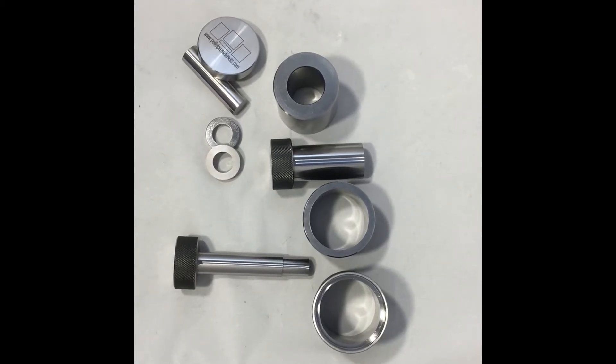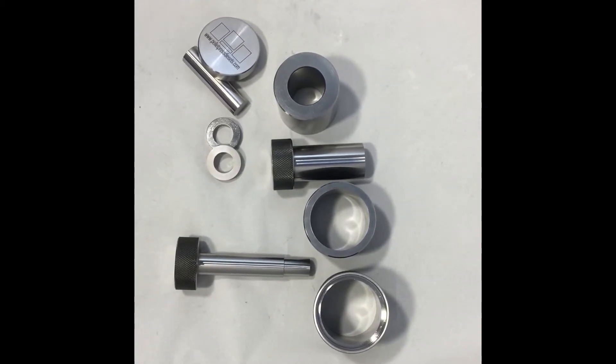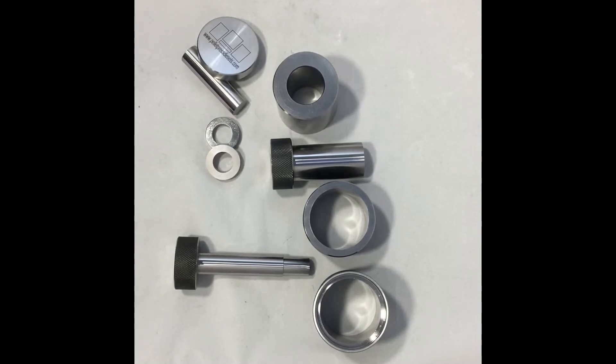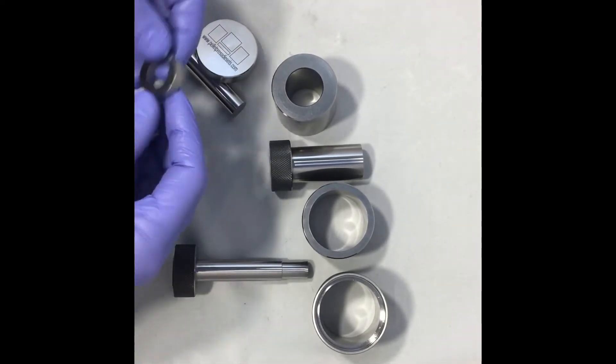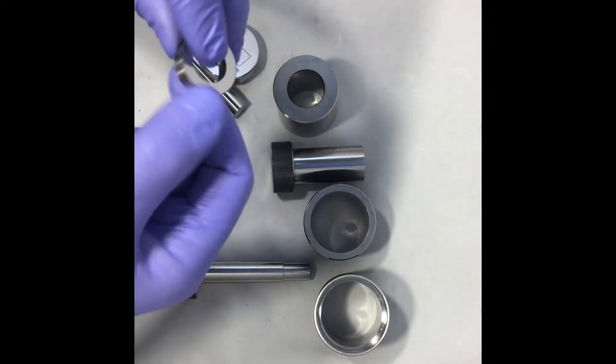Hey this is Joe from Pellet Press Die Sets and today we're talking about our annular die set. This is a die set for making ring-shaped pellets. The pellets will come out kind of like this shape.